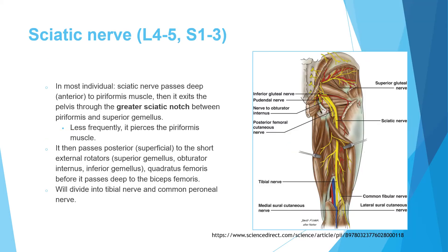The sciatic nerve comes from five roots: L4, L5, S1, S2, and S3. Compare this with the femoral nerve, which comes from three roots — L2, 3, and 4. The sciatic nerve comes from five roots: L4, 5, S1, 2, and 3.